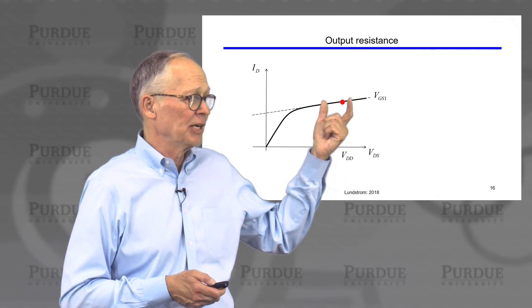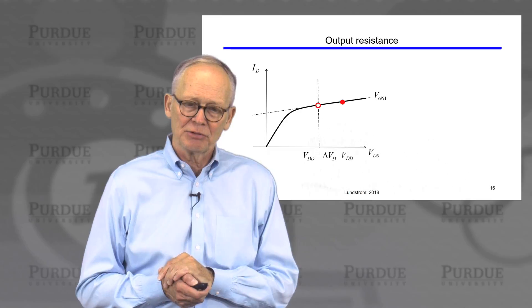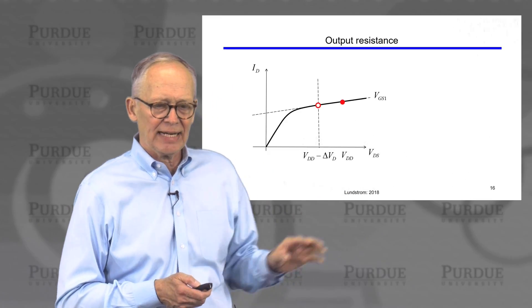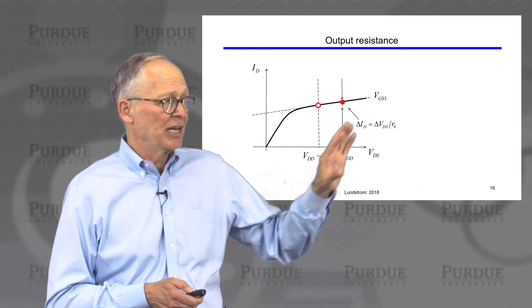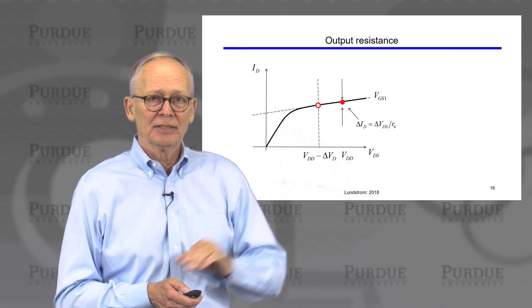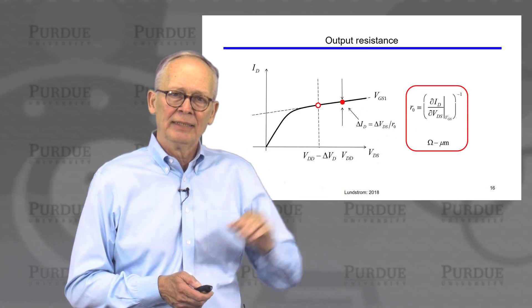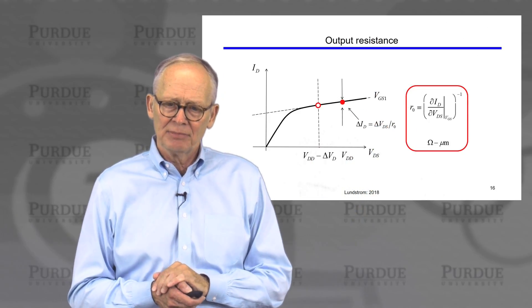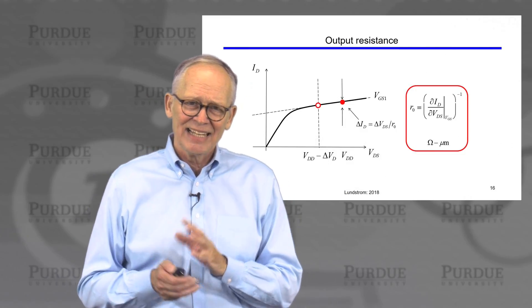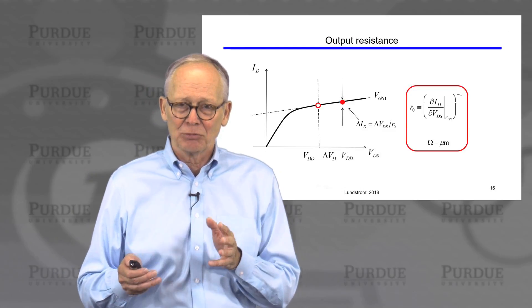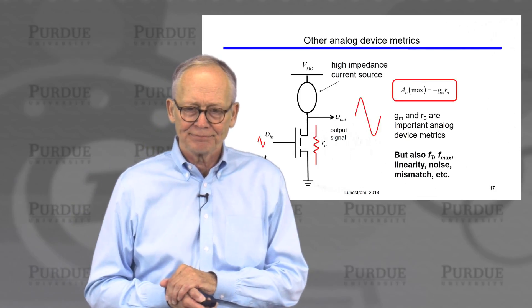The output resistance is just a measure of the slope, actually the inverse slope of the current in the saturation regime. This reflects the fact that if we change the drain voltage a little bit, we'll get a change in the drain current. That change in drain current can be related to the output resistance Rout. So the output resistance is just defined as one over the slope of the IV characteristic in the saturated regime. We would usually measure that in ohm dash micrometers, would be the appropriate units, if we're measuring the current in microamps per micrometer of width.